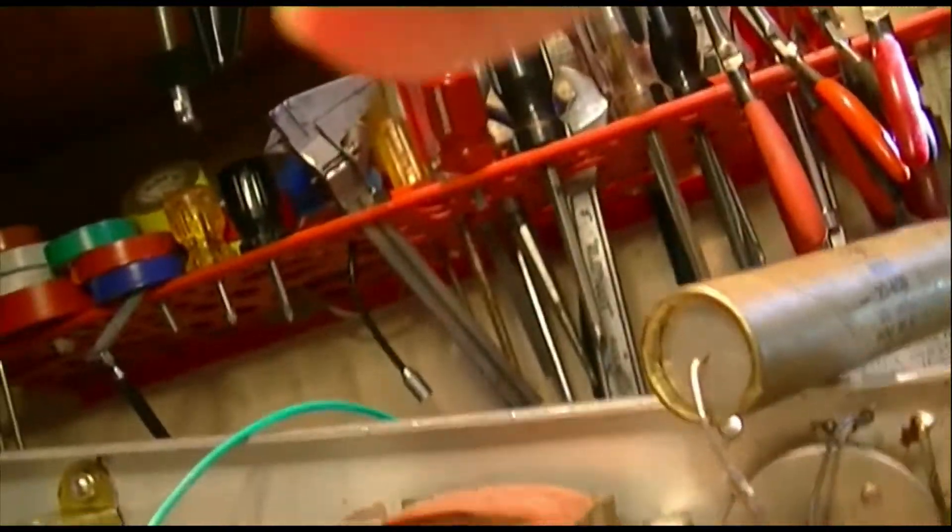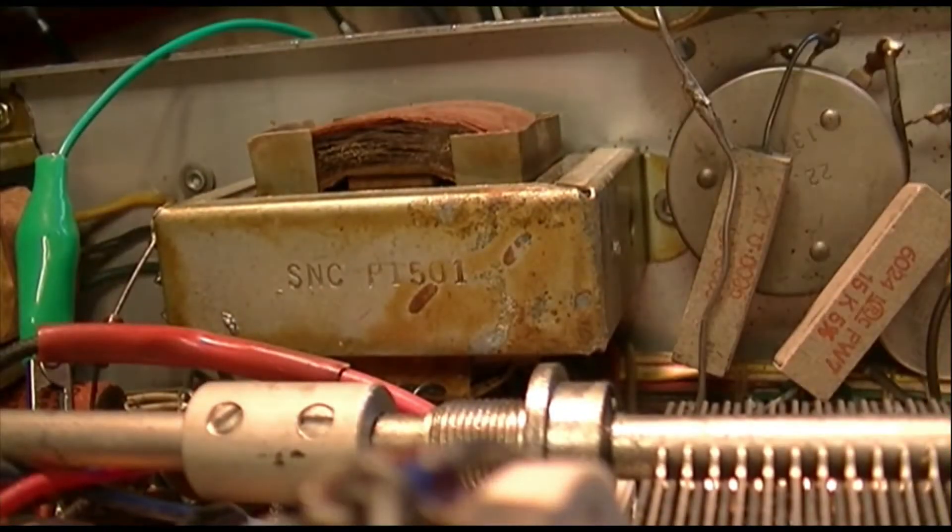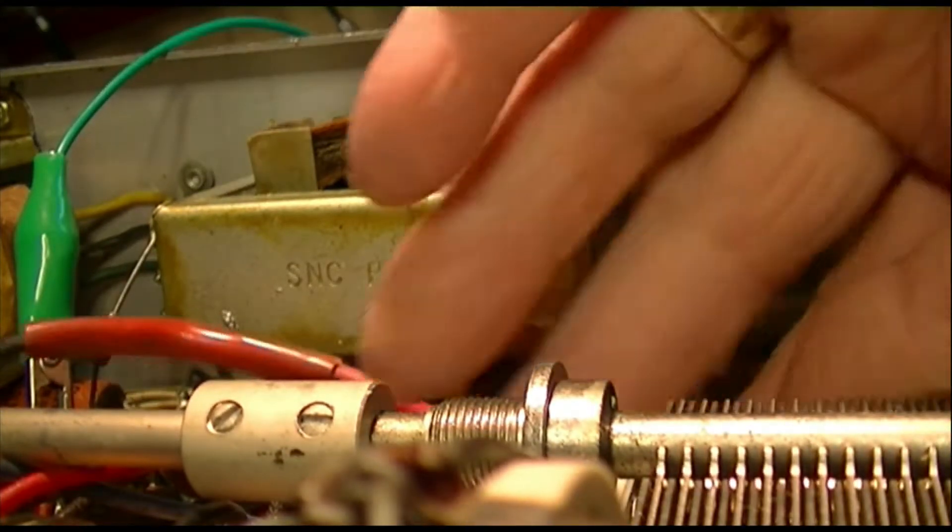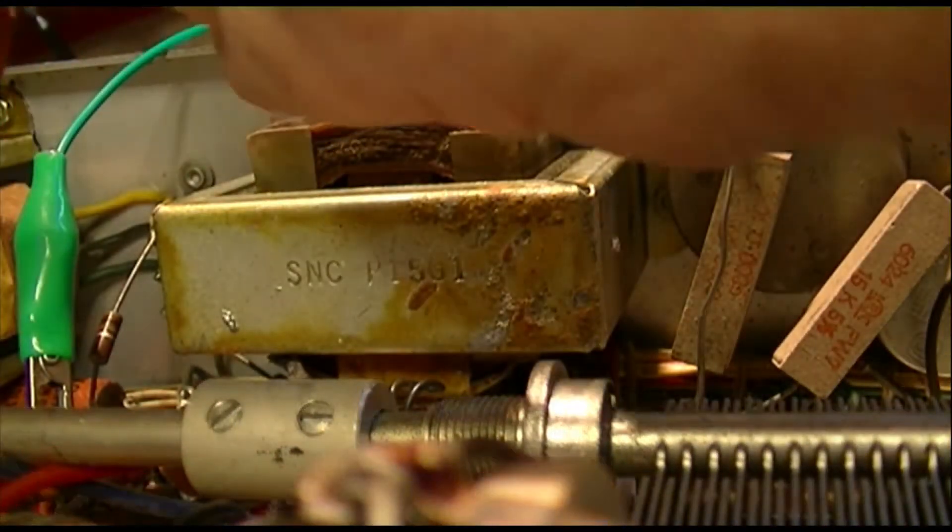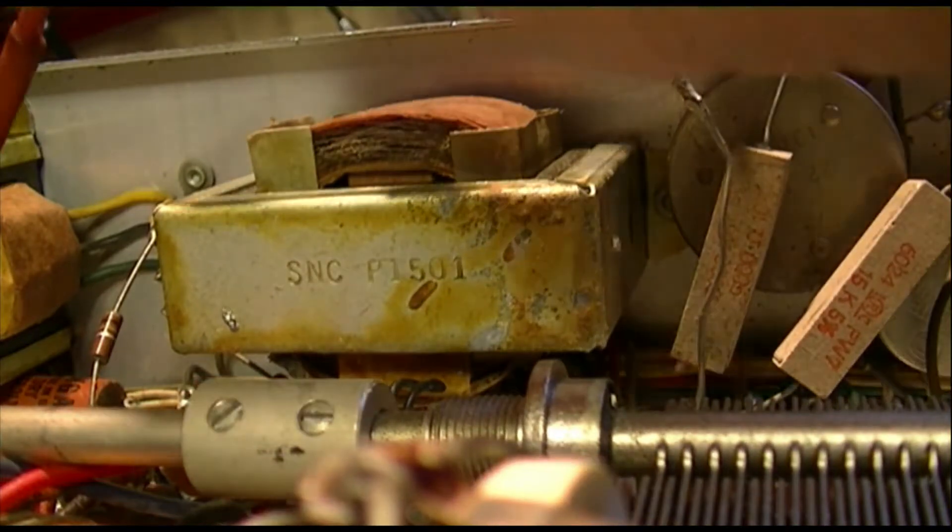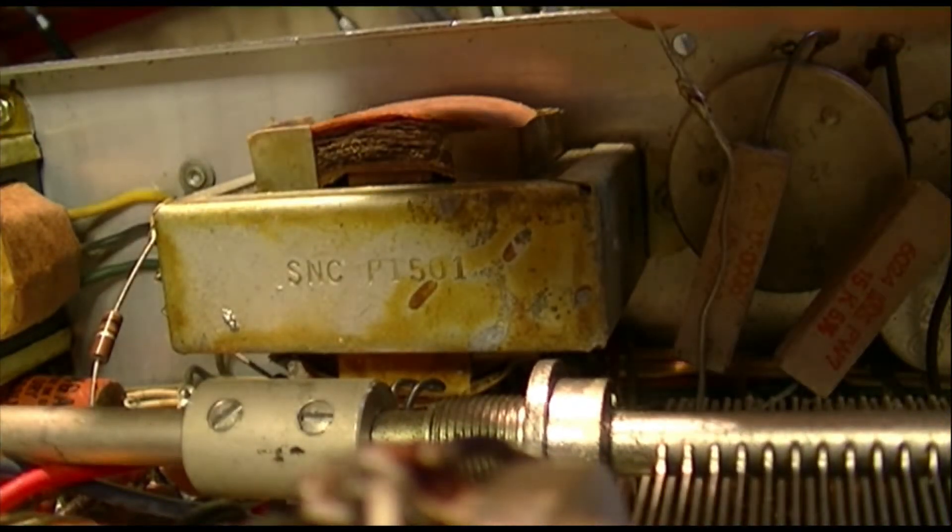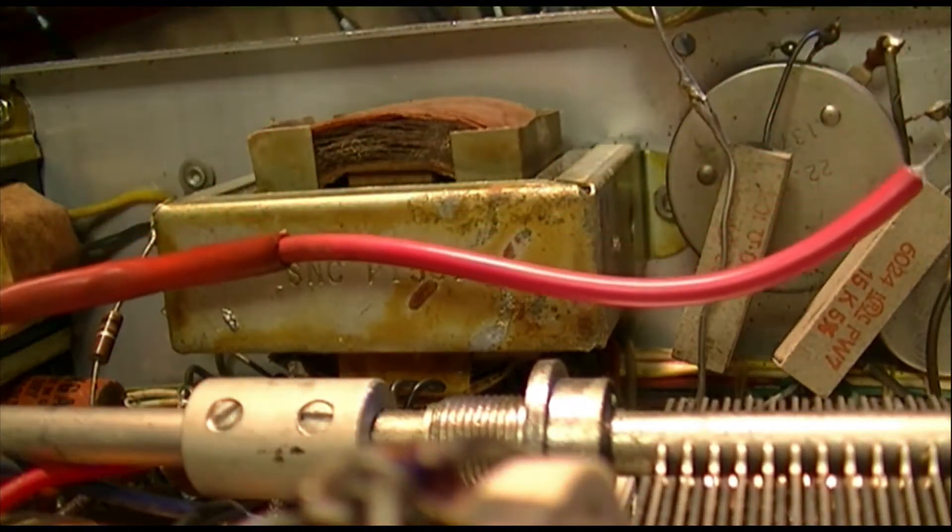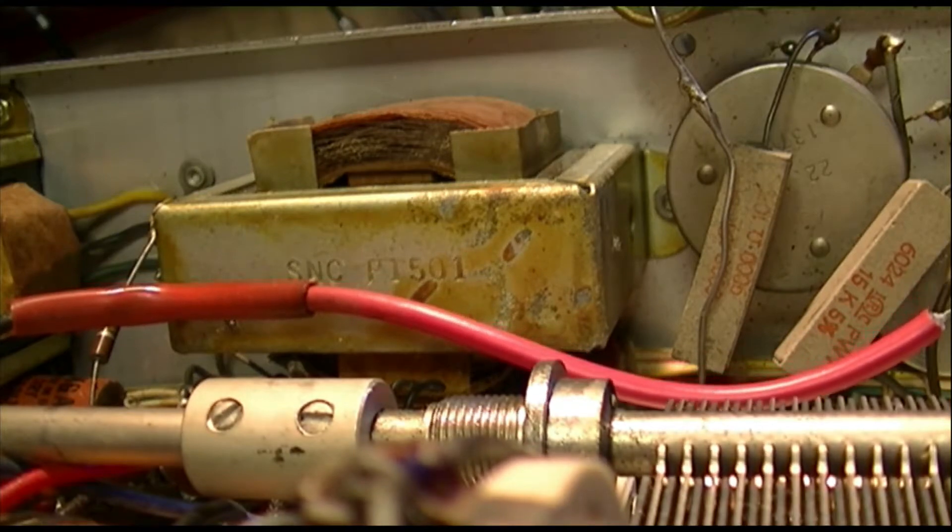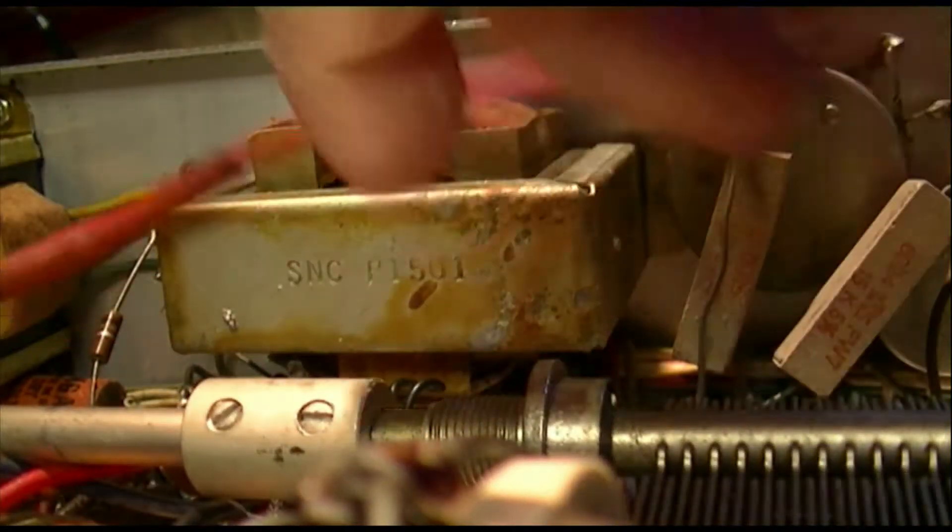The other thing that we're going to do is measure the secondary. To measure the secondary, this is one of the leads that goes to the plate caps of the modulator tubes. So we'll just hook a clip lead onto that. Not a very good clip lead at all, this thing's been mangled.